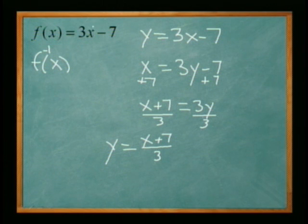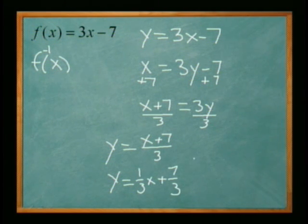Now if you look at our original problem, f of x equals 3x minus 7, that's a line, your mx plus b. So we want to write our inverse as a line. So we're going to separate this out, it's going to be 1 third x plus 7 thirds. So with inverse functions, switch the x and y, and then solve for y. Let's take a look at another one.